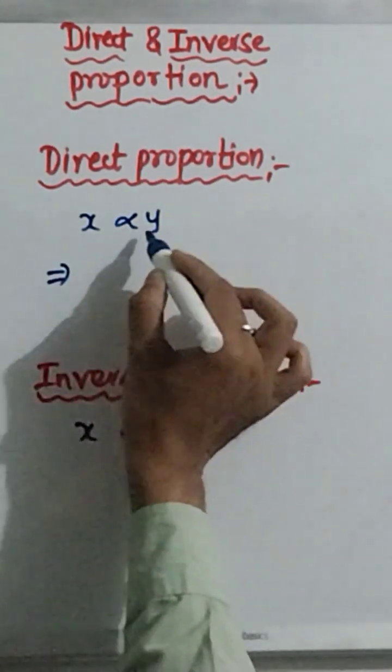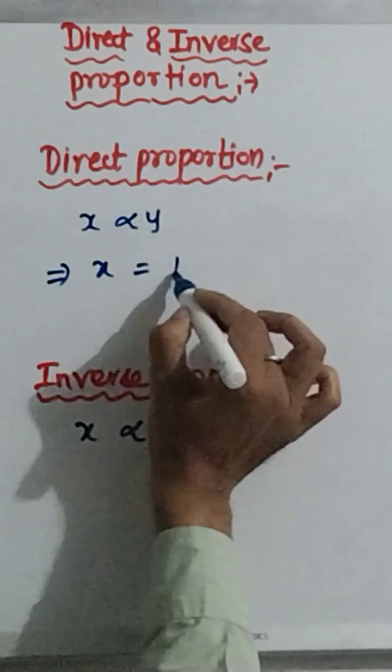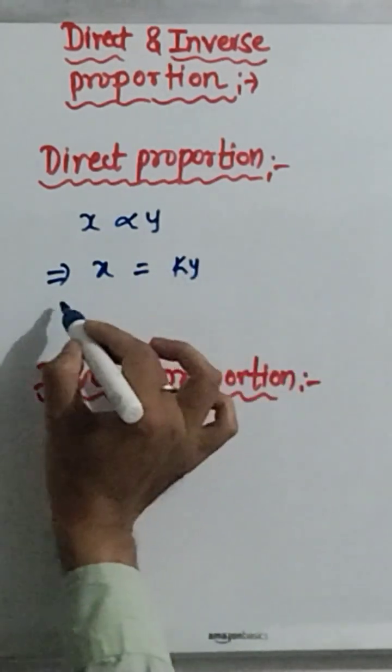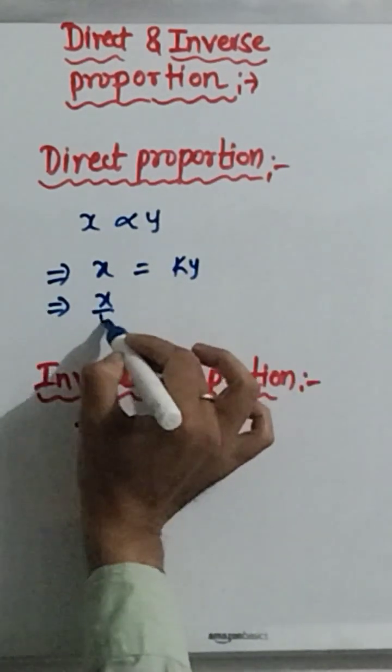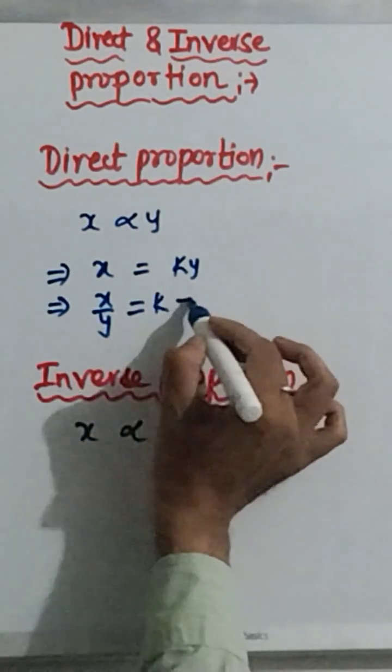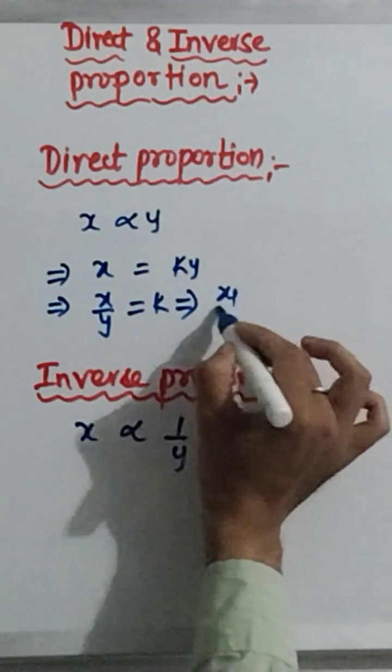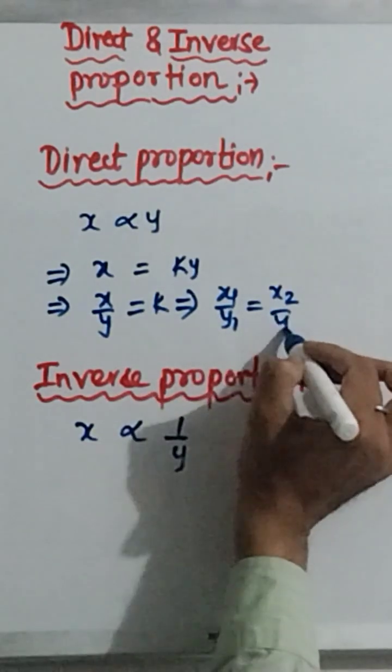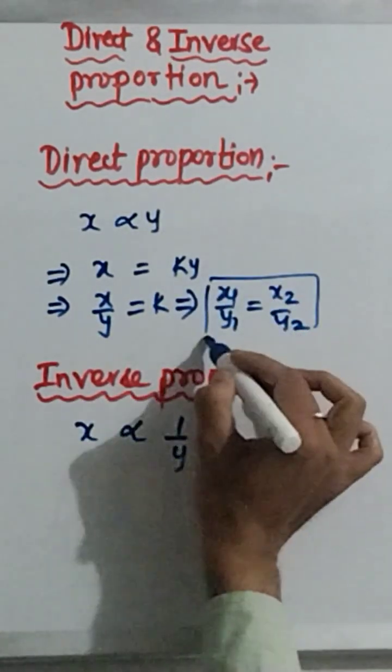So, what we get? x is equal to ky. y comes here, so x upon y is equal to k. So we can write here x1 upon y1 is equal to x2 upon y2. This is the direct.